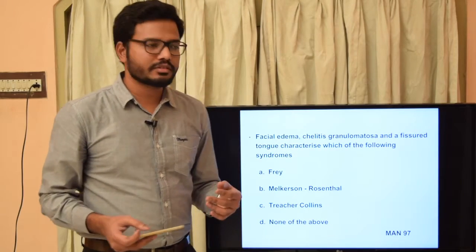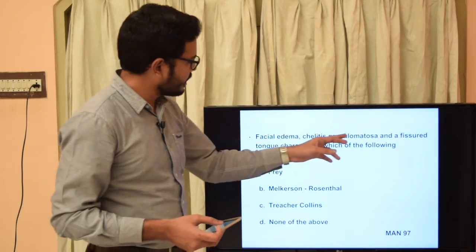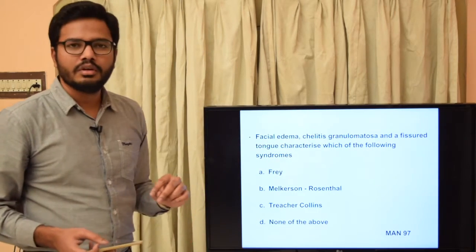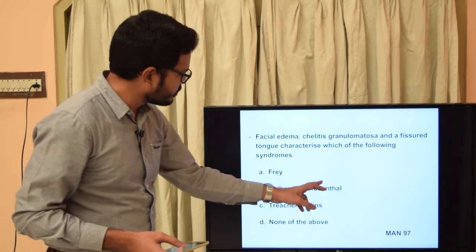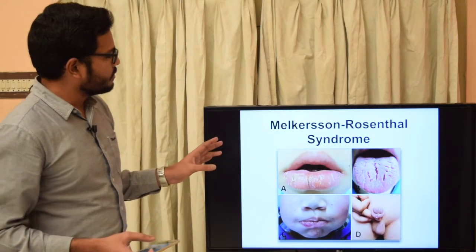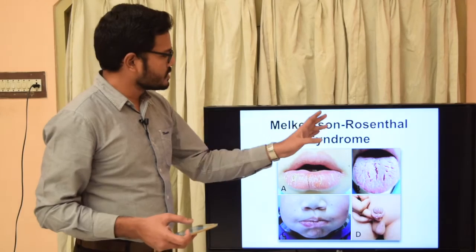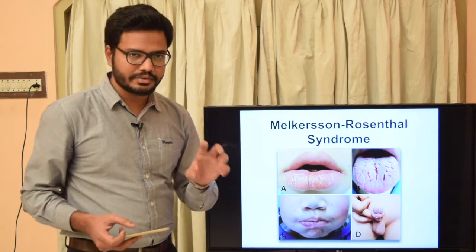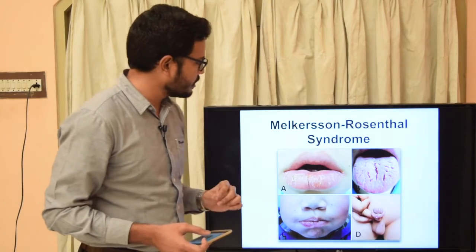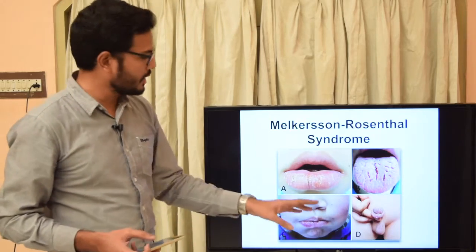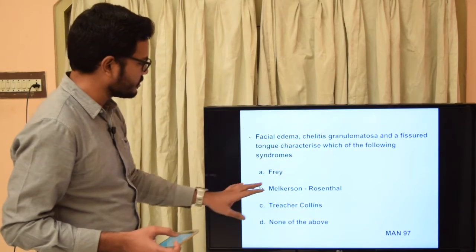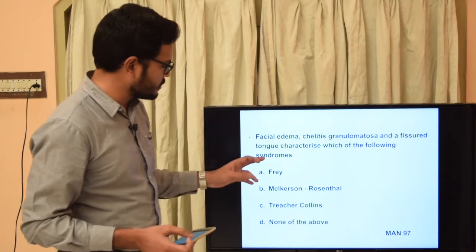Coming to the next question: facial edema, cheilitis granulomatosa, and fissure tongue characterize which of the following syndromes? Option A - Frey; option B - Melkersson-Rosenthal; option C - Treacher Collins; option D - none of the above. Melkersson-Rosenthal syndrome is characterized by a triad of facial or lip swelling (cheilitis granulomatosa), fissure tongue, and facial paralysis. In some cases there can be swelling of the genitalia as well.